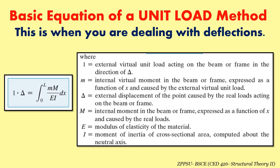Big letter M is the internal moment in the beam or frame expressed as a function of x, caused by the real loads. So while small m is obtained from the virtual structure, big M is obtained from the real (actual loaded) structure where all the external loads are present.